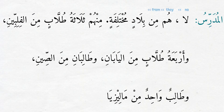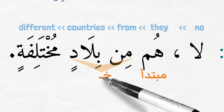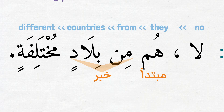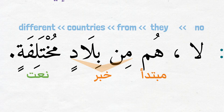المدرس says: لا هم من بلاد مختلفة — No, they are from different countries. Here, هم is مبتدى. من بلاد is خبر شبه جملة. And مختلفة is a new word that means 'different.' It is coming as نعت for بلاد. That is why it is مجرور also.